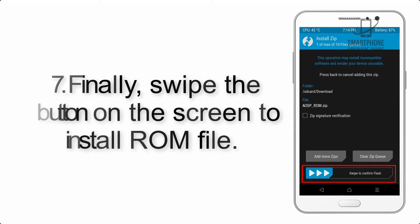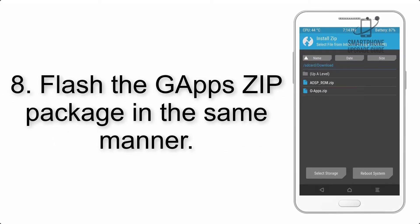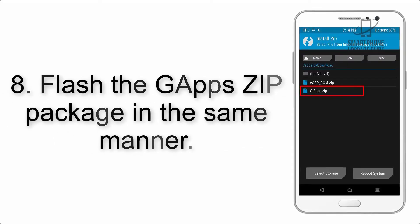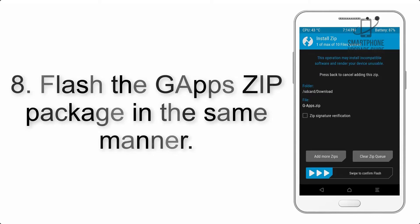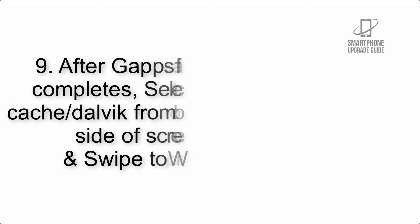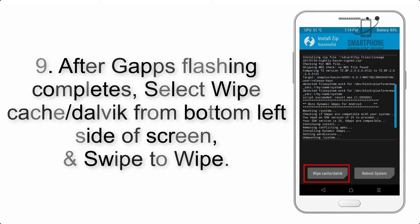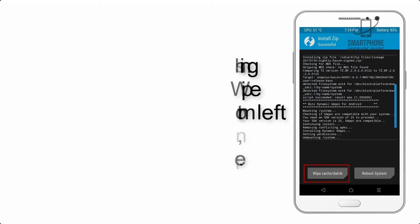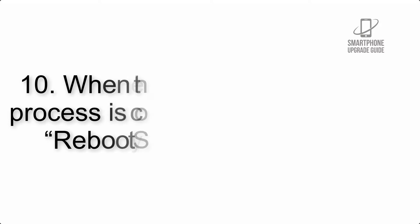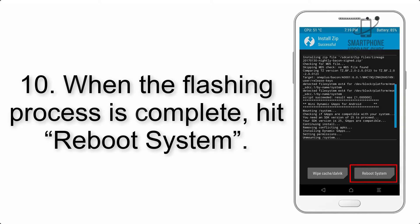Step 7: Swipe the button on the screen to install the ROM file. Step 8: Flash the GApps zip package in the same manner. Step 9: After GApps flashing completes, select Wipe Cache and Dalvik from the bottom left side of the screen and swipe to wipe.